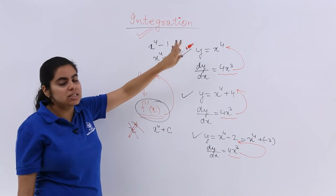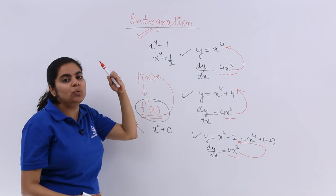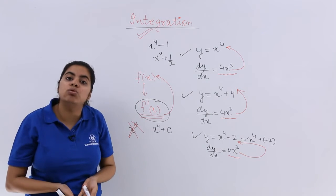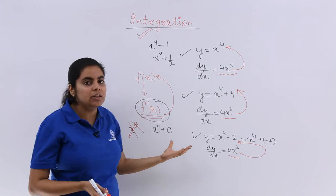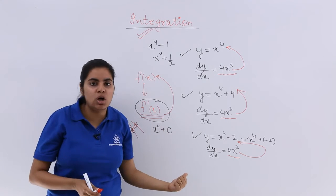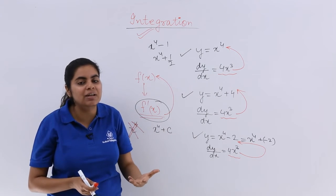So the answer would be x raised to the power 4 plus any constant. That arbitrary constant can be anything. It can be 1, minus 1, it can be 1 by 2, it can be minus 1 by 2 and so on. So that is important. What is the constant? That we do not know. It can be any arbitrary constant.